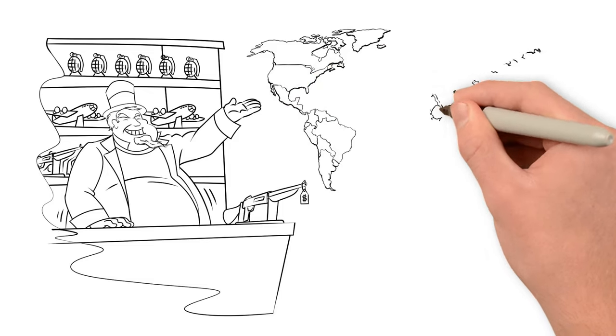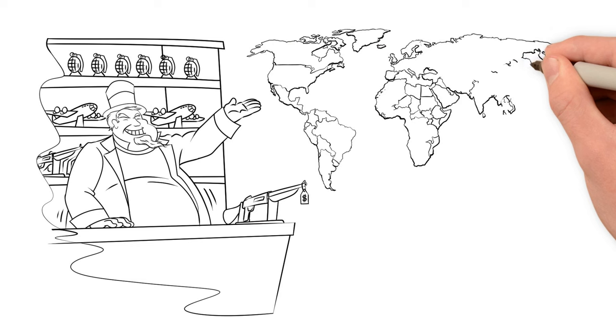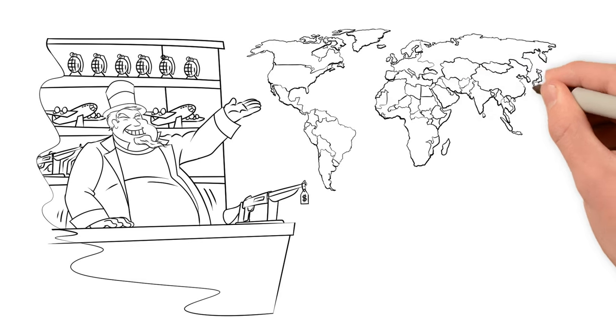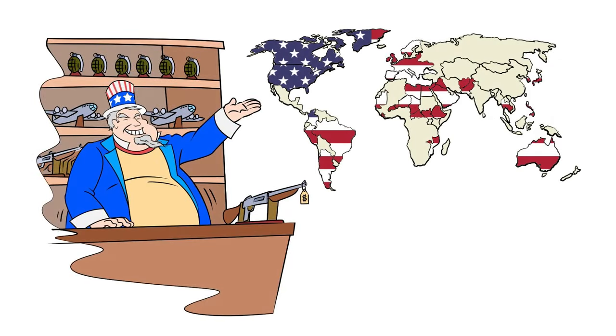The military-industrial complex also allowed America to fight a new kind of war by funneling weapons to foreign soldiers to fight what are known as proxy wars.